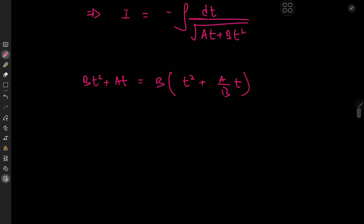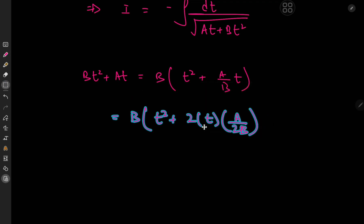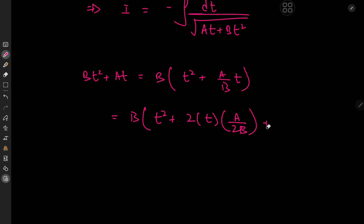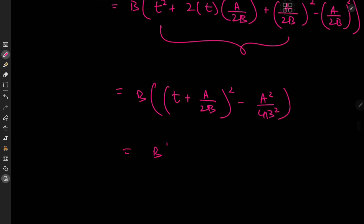We complete the square: b·[t² + 2t·(a/2b)] = b·[(t + a/2b)² - (a/2b)²], which expands to b·(t + a/2b)² minus a²/(4b). So the denominator of the integrand transforms accordingly, setting up a recognizable integral form.